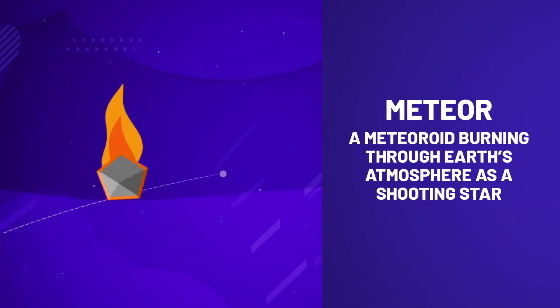Meteors are chunks of asteroids or comets that burn up when they hit the Earth's atmosphere, causing a streak of light in the sky more familiar to us as a shooting star.